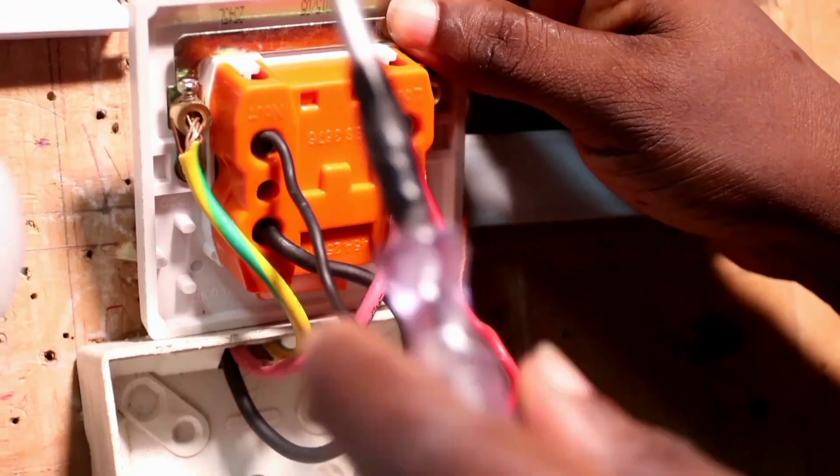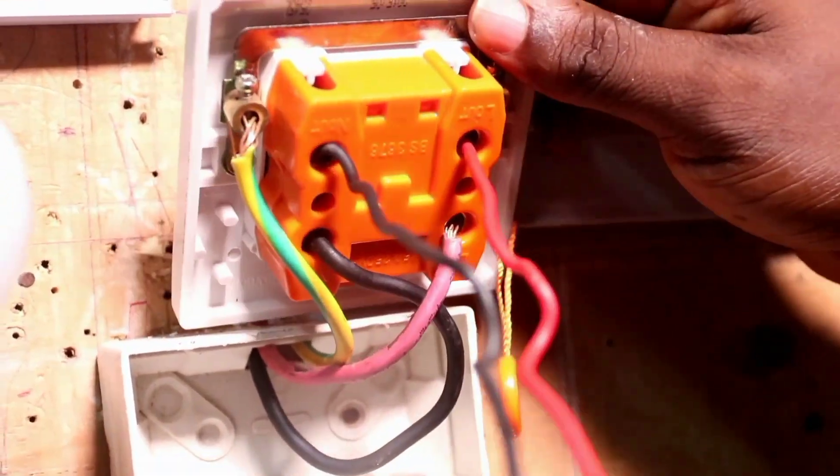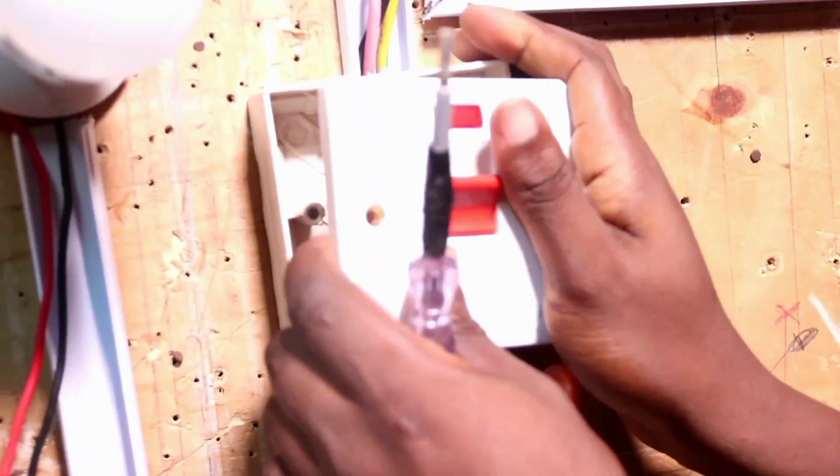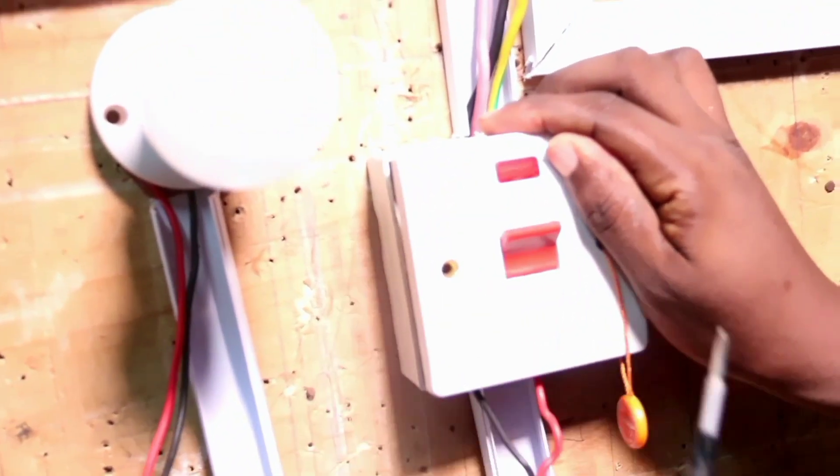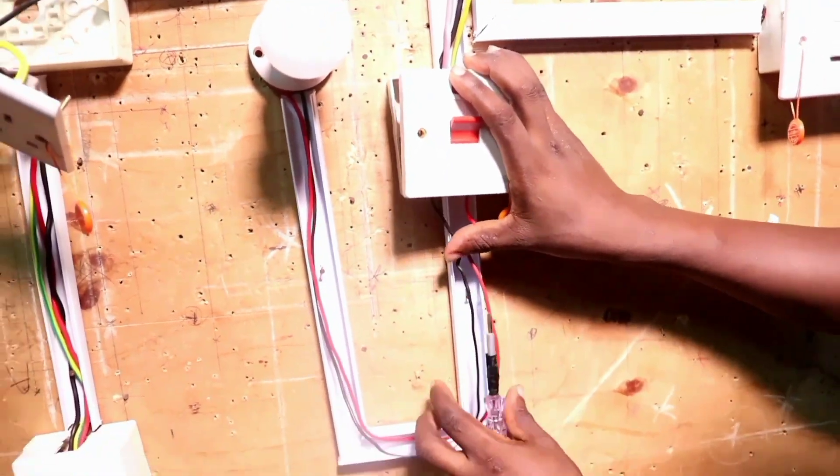Now you can see, this is for the load. This is the input. I have connected my DP water heater switch. And from there, you can see where the load is connected.